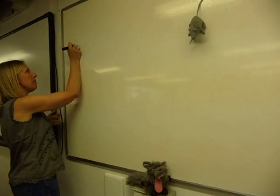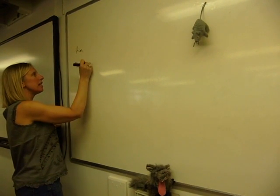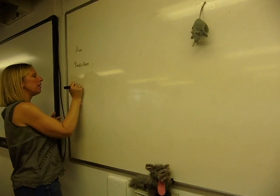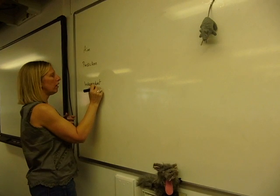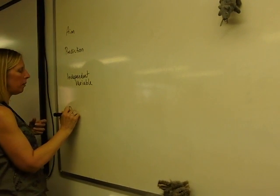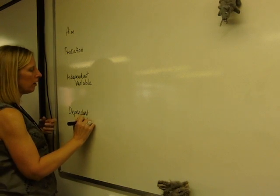So initially you write your aim, followed by a prediction. And these need to link in with the independent variable and the dependent variable. So we'll look at those first.